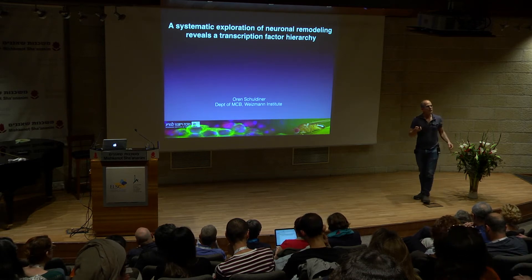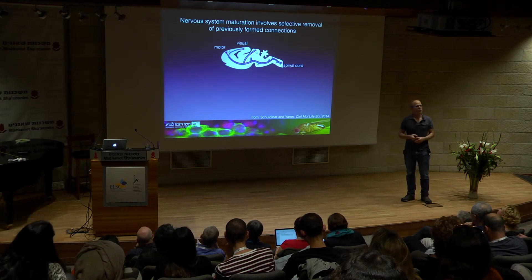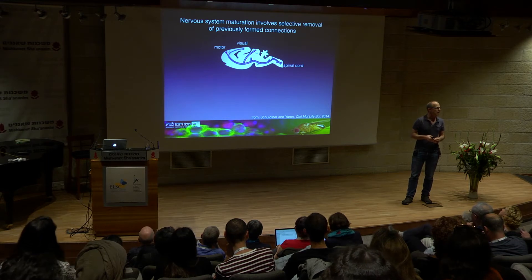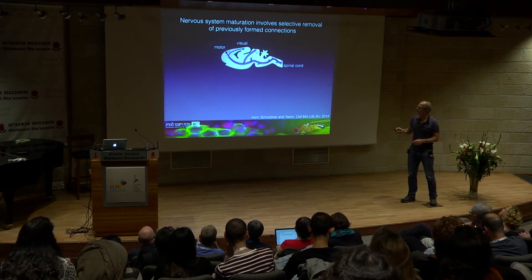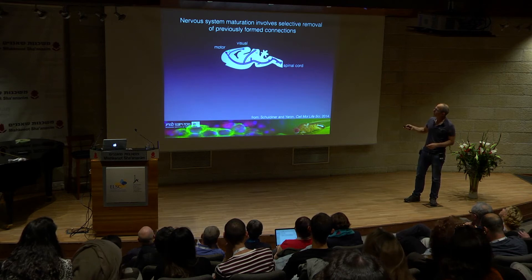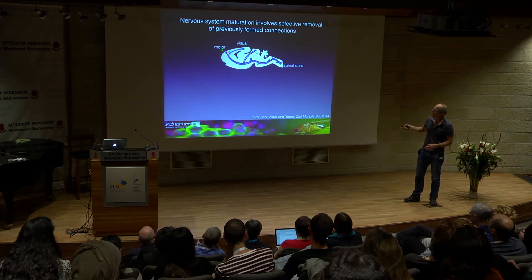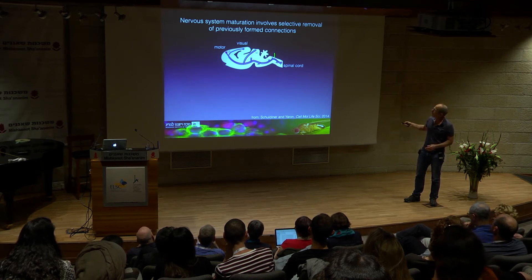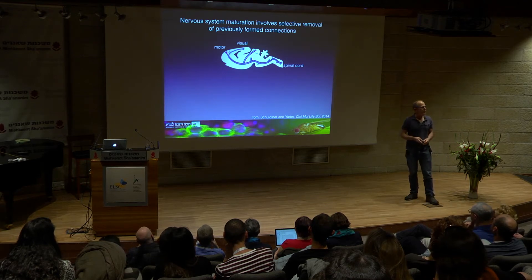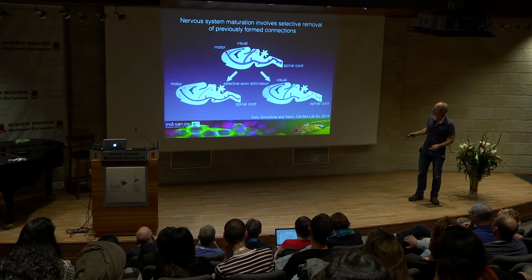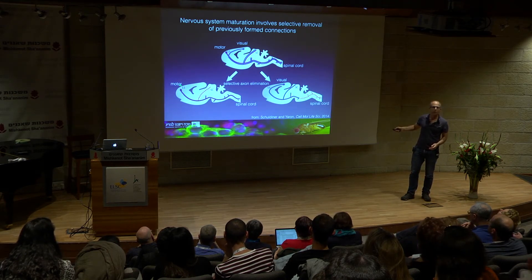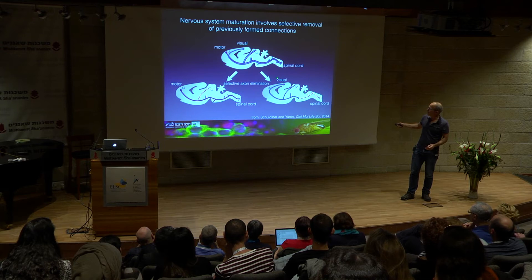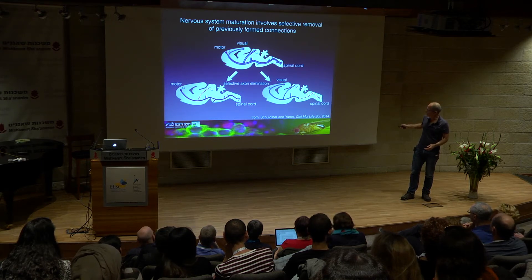Probably the most classical example of neuronal remodeling is the development of layer 5 cortical neurons, discovered about 40 years ago by Denise O'Leary and others. Layer 5 cortical neurons from very different areas—the visual area and the motor area—initially form identical connections to both motor-specific regions such as the spinal cord and visual-specific regions such as the superior colliculus. Only later do they undergo selective axon elimination, so that motor-area neurons eliminate visual-specific connections and visual-area neurons eliminate motor-specific connections.